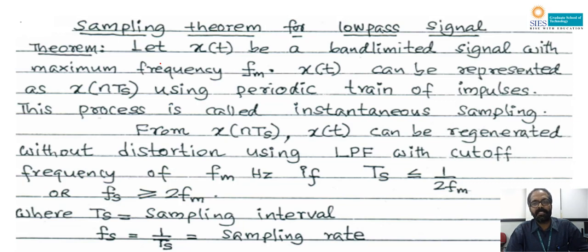The bandwidth is fm Hz, so we can say it is a low pass signal with a cutoff frequency fm Hz. That is why first the signal passes through a low pass filter with a cutoff frequency fm. Normally for voice communication, especially in telephone communication, the cutoff frequency fm is equal to 3.4 kHz. According to the sampling theorem, let x(t) be a band-limited signal with maximum frequency fm — that is the meaning of a low pass signal. x(t) can be represented as x(nTs), where nTs shows that the signal is a discrete time signal existing only at every Ts seconds.